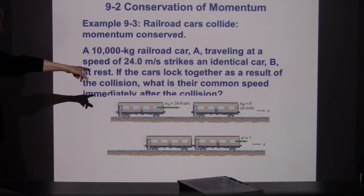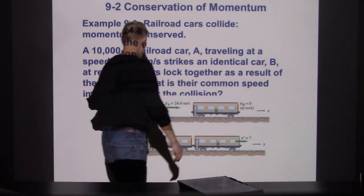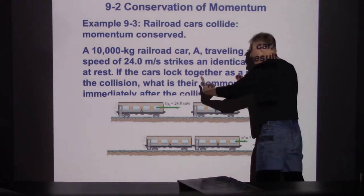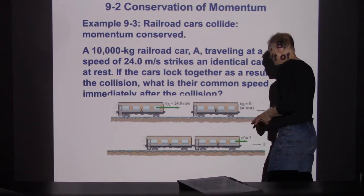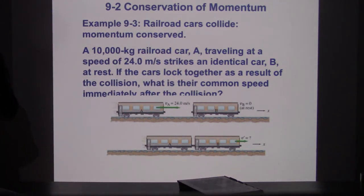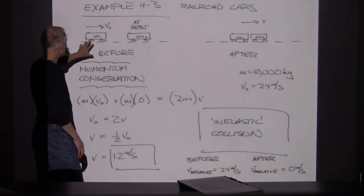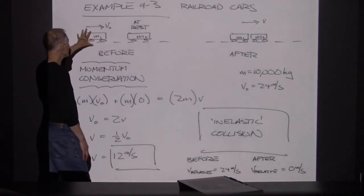What it says happens is the two cars connect and move off together — there's no bouncing back. This is what's referred to as an inelastic collision. I can write down the momentum before: M times V naught. Both railroad cars have the same mass, so I dropped the M1s and M2s and just wrote this as M. The momentum of this one plus the momentum of this one equals the total momentum. I can treat those two cars coming out of the collision as having a mass of 2M and velocity V.